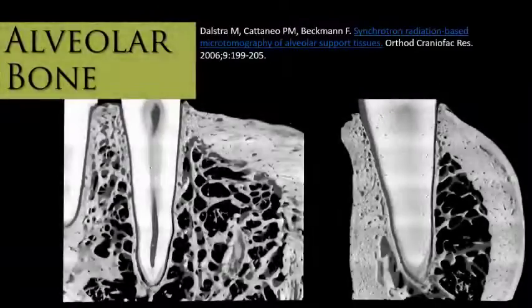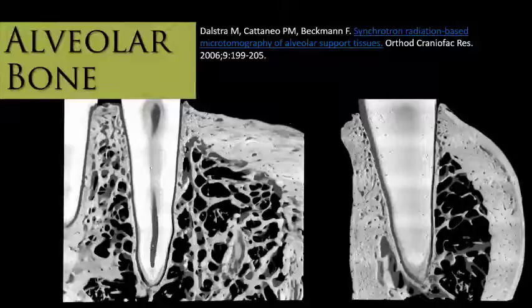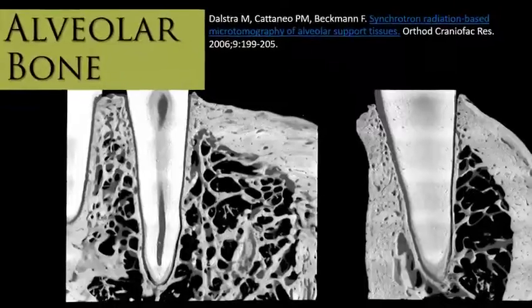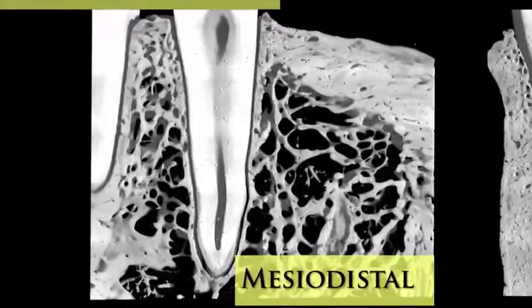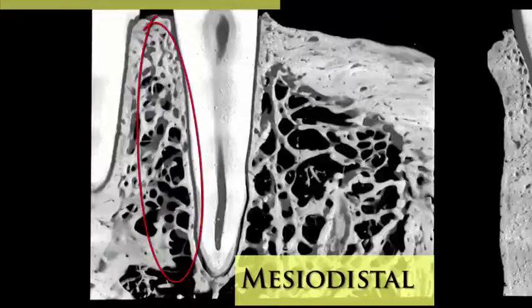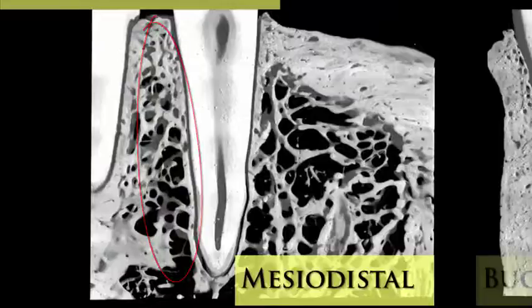Let's see this scenario in more detail in these beautiful images obtained by synchrotron radiation-based microtomography. In this paper, written by my Danish teachers and friends, Professor Michel Dostra and colleagues, we can clearly observe the complexity of the alveolar bone, whose structure differs according to the area evaluated. In a mesio-distal view of the lower canine region, we can see a denser trabecular area in the cervical region than in the apical region.